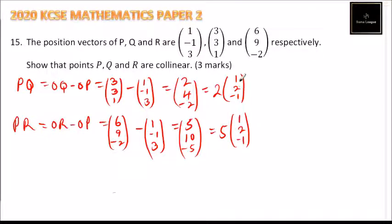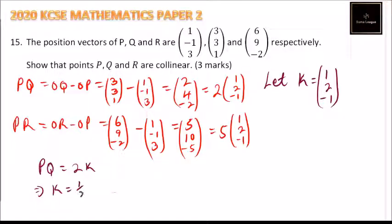So you can see we have something in common. What we do here is we say, let K equal (1, 2, -1), this vector that is common. So we can come here and say PQ equals 2K, implying that K equals 1/2 PQ. And then we can say PR equals 5K, so K equals 1/5 PR.